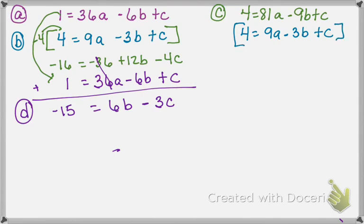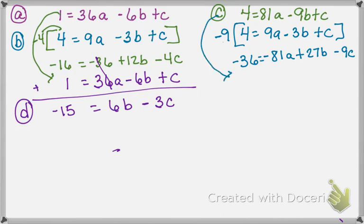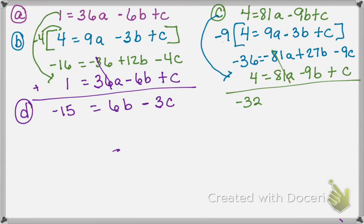I'm going to multiply the bottom equation by negative 9 so I can get a negative 81a. So negative 9 times 4 gets me negative 36, equals negative 81a plus 27b minus 9c. Now I'm going to rewrite equation c: 4 equals 81a minus 9b plus c, and combine them. I have negative 32, the a's are gone, and I have positive 18b and negative 8c. We'll call this equation e.